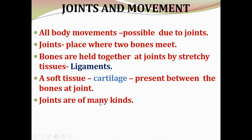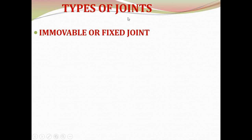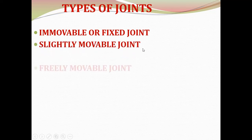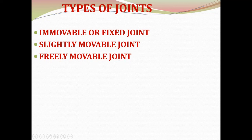Joints are of many kinds. There are three types of joints: immovable or fixed joints, slightly movable joints, and freely movable joints. Immovable joints cannot move, slightly movable joints can move only slightly, and freely movable joints can move freely.